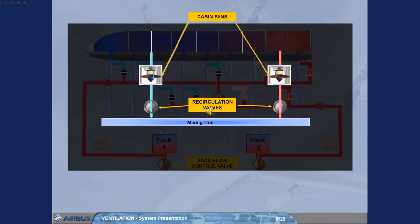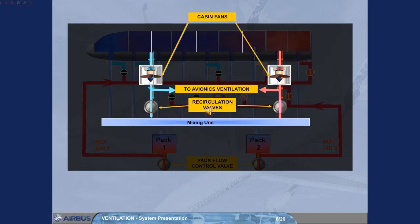Two cabin fans, which blow air to the mixing unit of the air conditioning system, are also used for the avionics system. The cabin fans run continuously as long as the aircraft electrical system is supplied. The recirculation valves will partially close when both packs are off in order to ensure sufficient airflow to the avionics system.